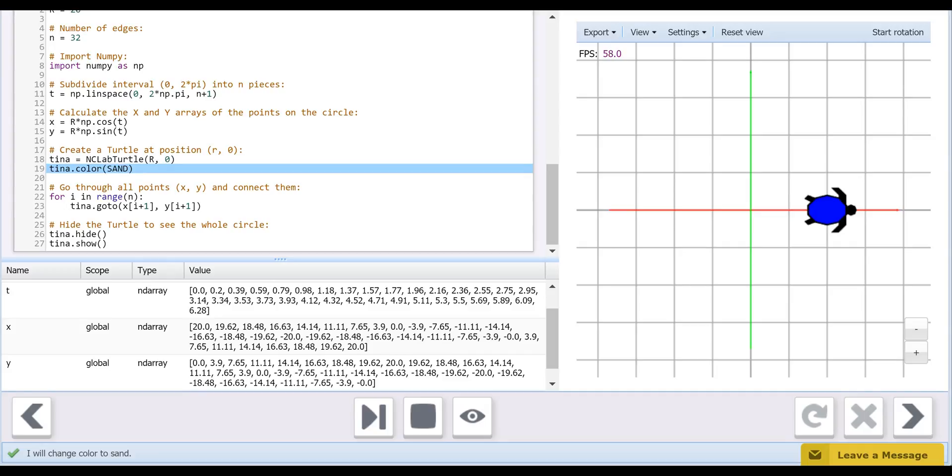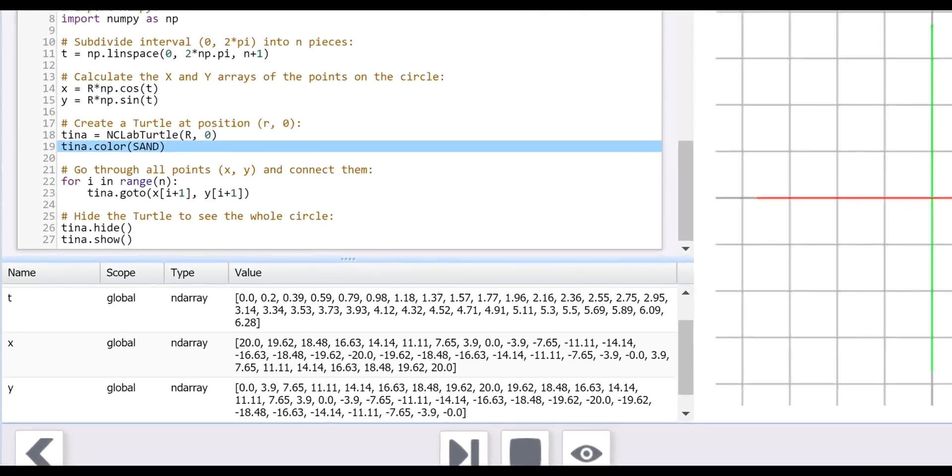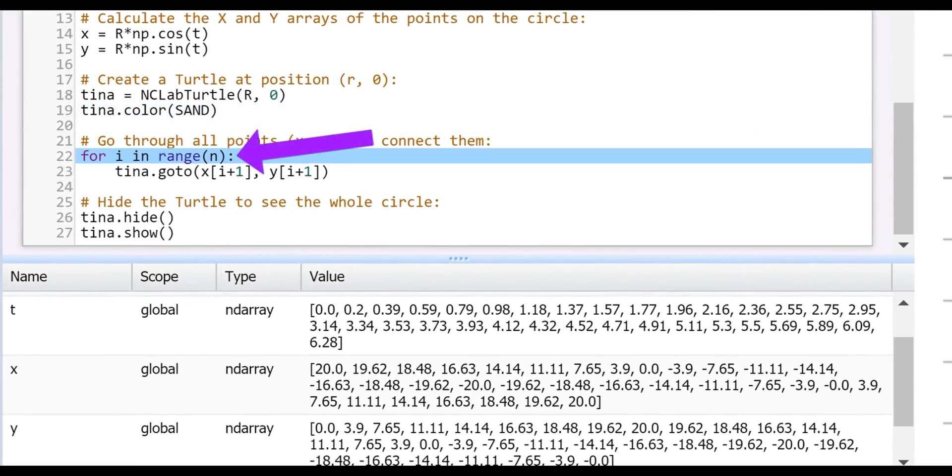For fun, we will color the line Sand on line 19 in honor of real turtles tracing arcs through sand on the beach. To draw the lines from point to point, we use a for loop to call each item in order from the arrays.